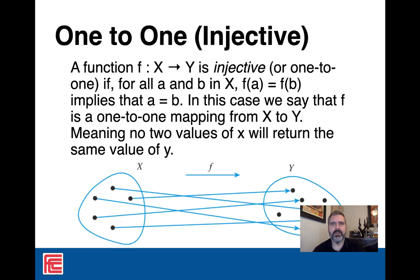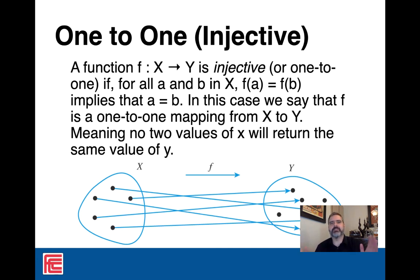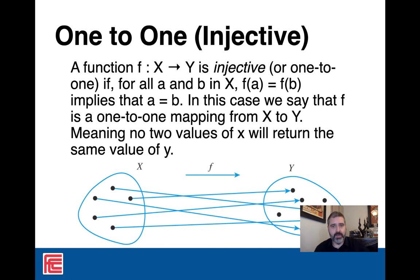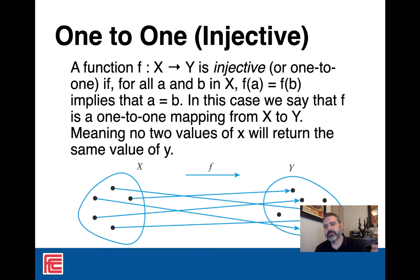A function is called one-to-one, or injective, if every single x points to a unique value of y — we never have two different x values pointing to the same y. You can see this in the graph: every element of X points to a different value of Y. Some values of Y may not be pointed to, and that's fine — you can be one-to-one without being onto. As long as no value of y has two x's pointing to it, the function is one-to-one.